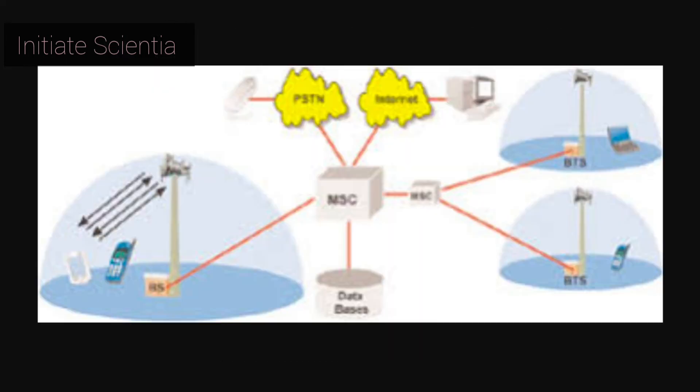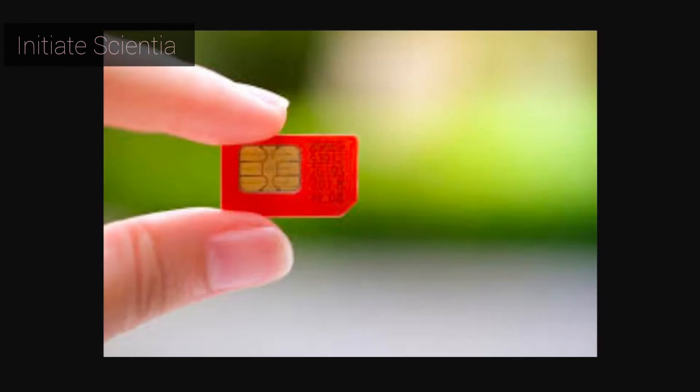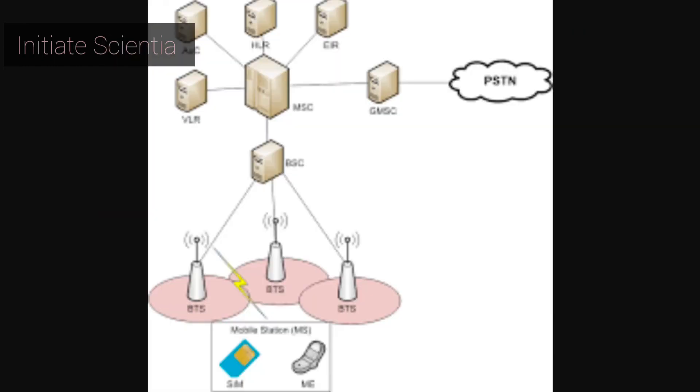The SIM is a detachable smart card containing the user's subscription information and phone book. This allows the user to retain their information after switching handsets. Alternatively, the user can change operators while retaining the handset simply by changing the SIM.